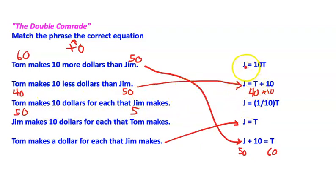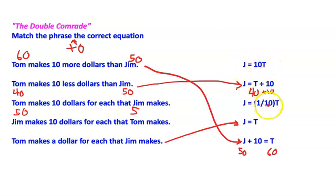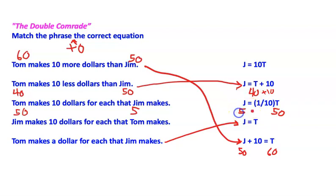Let's check: does Tom times ten equal Jim? That wouldn't work — if you put five dollars for Jim and fifty for Tom, that doesn't hold. This one works: one-tenth of Tom's dollars equals Jim. If Tom makes fifty, one-tenth of fifty is five — that's Jim. So if Tom makes ten times as much, you could say Jim equals one-tenth of Tom.